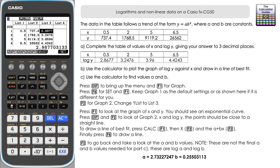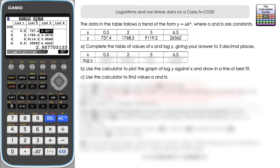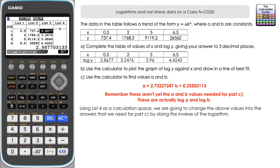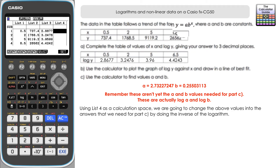Press Exit, and I'm going to use list four as free space to do a calculation. What we need to be careful of is that those a and B values are not our final answer for part C. Because we're still working with the logarithm of Y, what we actually have is log a and log B — we need to take the inverse logarithm to find the true a and B from the original equation Y equals a times B to the power of X.